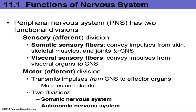The sensory (afferent) division consists of somatic sensory fibers and visceral sensory fibers. Somatic sensory fibers convey impulses from skin, skeletal muscles, and joints to the CNS — and we are conscious of these sensations. You can feel your muscles tense, your skin being touched, and your joints moving. These are all conscious sensations.